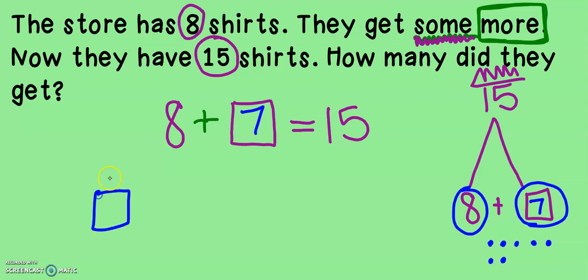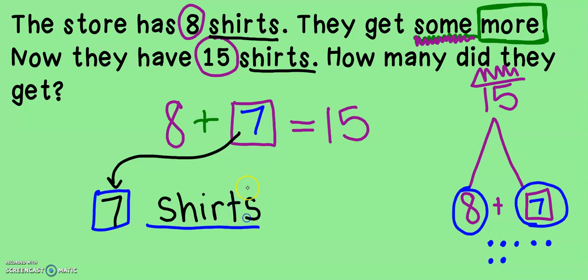Now, on our page, we might have a box and a line. If we have one, that means that we need to write our answer in the box. There's our seven. Then we need our label. What was the thing that we were looking at in this problem? In this problem, we were looking at shirts. So we can look back to the problem to make sure that we spell shirts correctly. Let's try another problem.